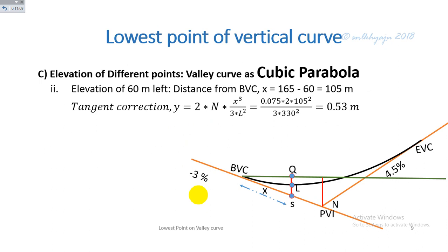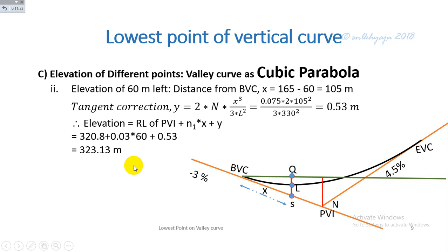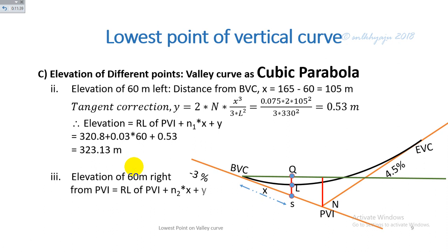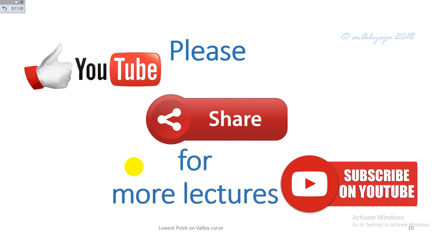For the elevation at 60 m left of the point of vertical intersection (cubic parabola), the distance from the beginning of the vertical curve is 105 m, the tangent correction is 0.53 m, and the elevation = RL(PVI) + N1·x + Y = 223.13 m. The elevation at 60 m right is similarly calculated as 224.03 m. Don't forget to like, share, and subscribe for more tutorials and lectures.